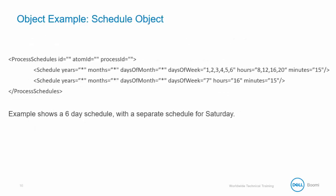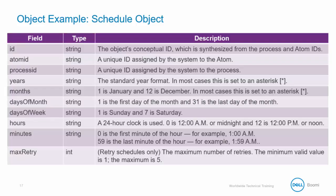Here is an example of an object — the schedule object query. This example shows a six-day schedule with a separate schedule for Saturday. This is an example of the documentation available in the user guide for different objects. The fields specified here are used to define execution times in the scheduling dialog, and an asterisk indicates that the schedule should run every minute, hour, or day of the week wherever that asterisk exists.